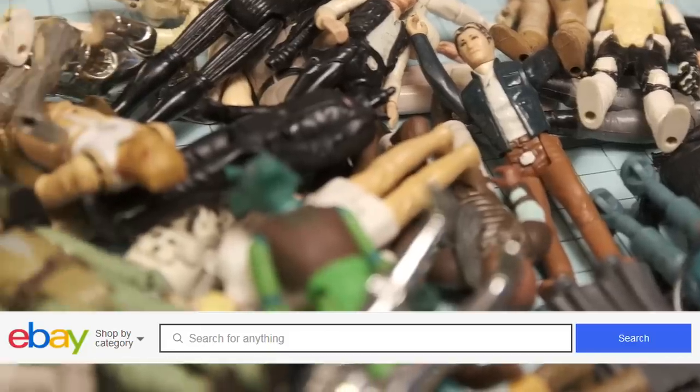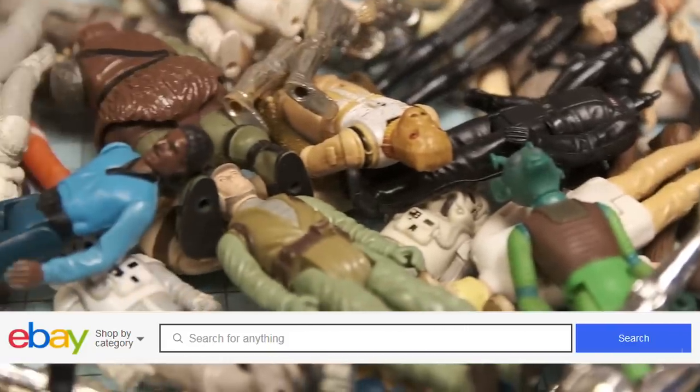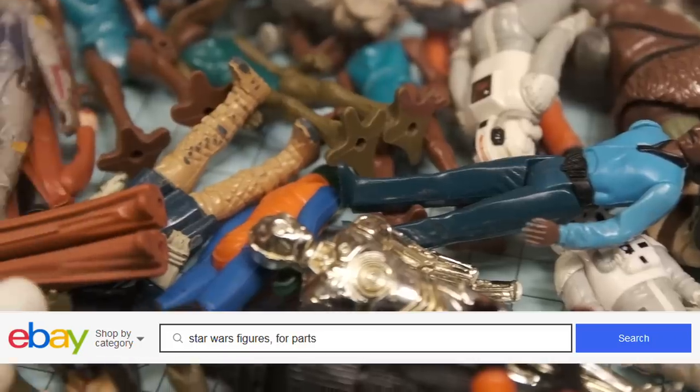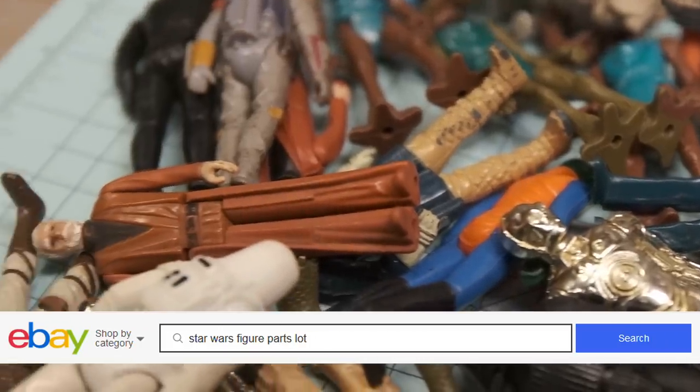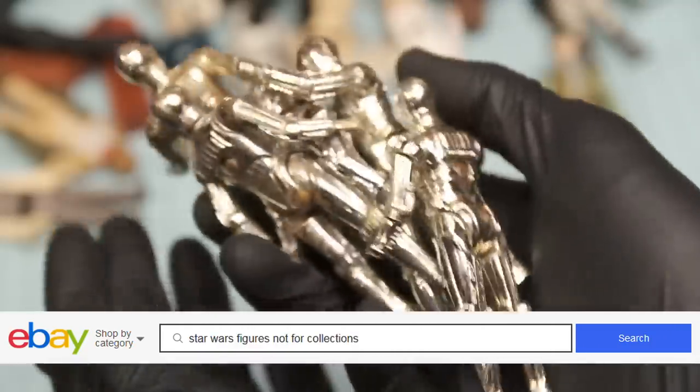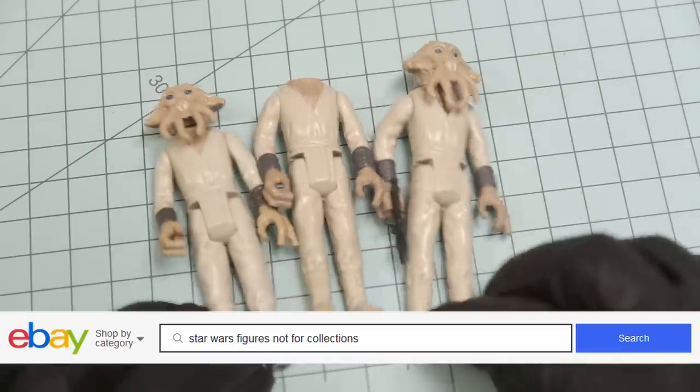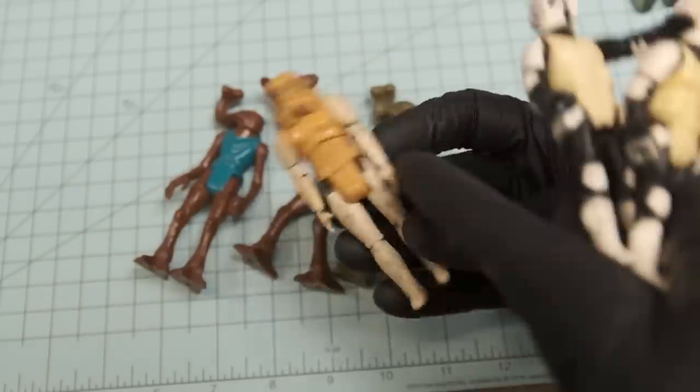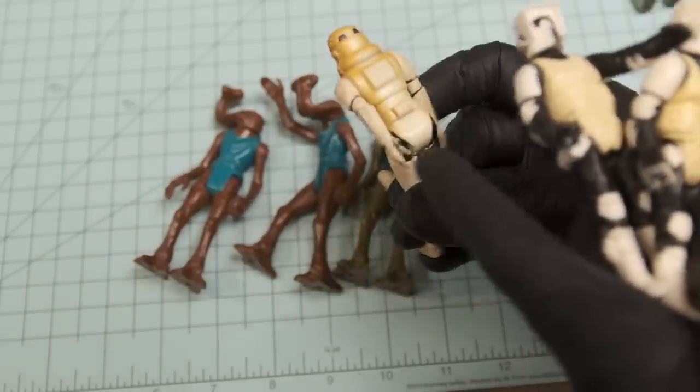You can get up on eBay.com and type in Star Wars figures for parts, chewed up Star Wars figures, Star Wars figures not for collections, Star Wars figures modification purposes. Look at the Stormtrooper. I don't think I have ever seen one that's that yellow.